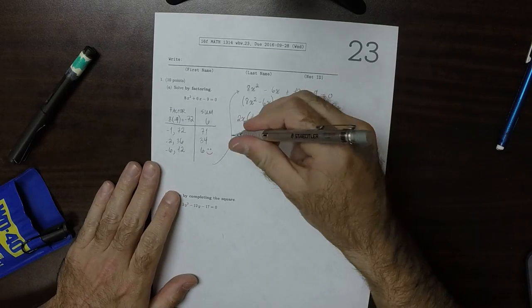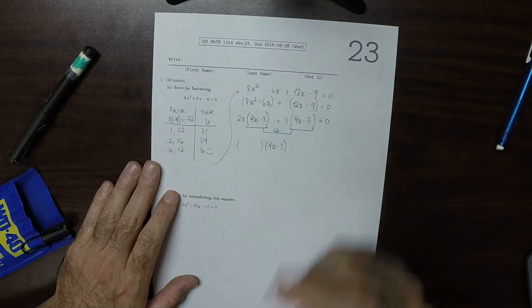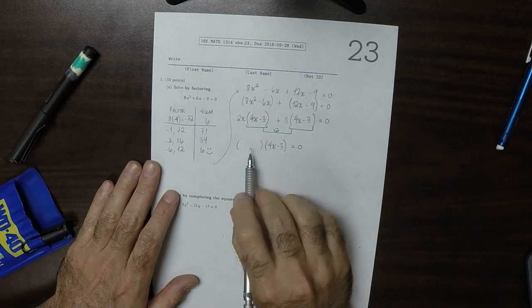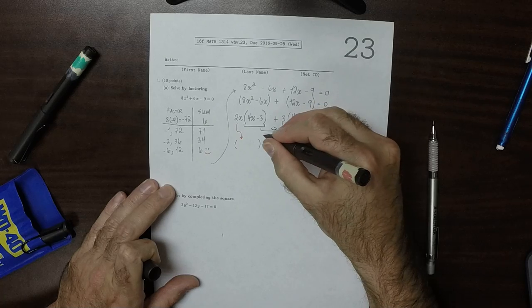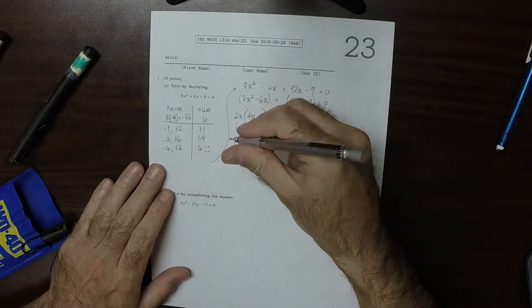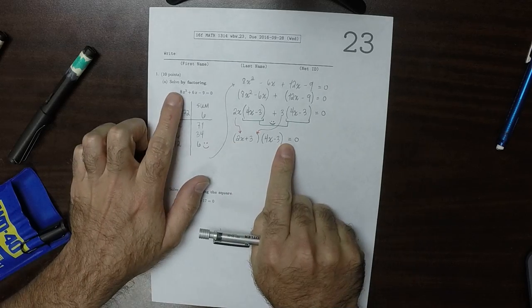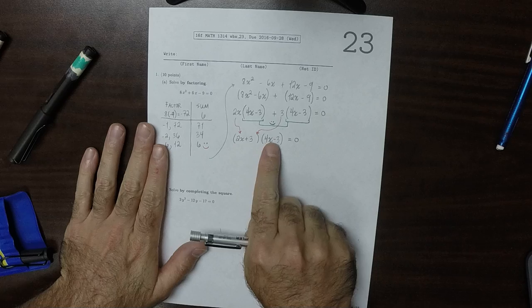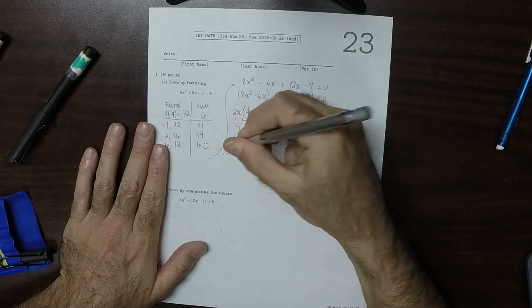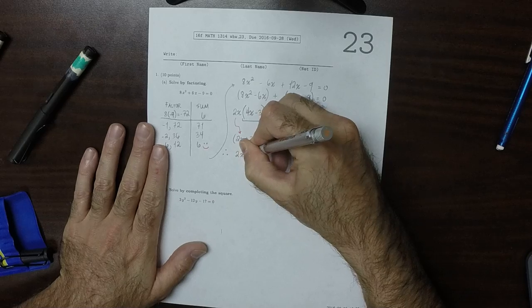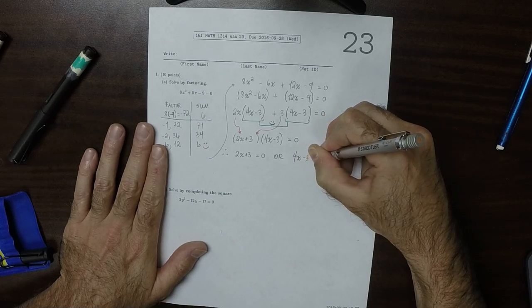So 4x minus 3 can be factored out. That's a common factor, and the 2x and the 3 go in. We've factored this expression, and the product is equal to 0, so as a result,